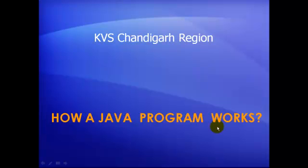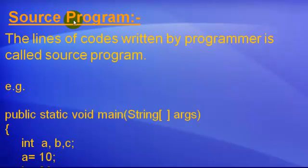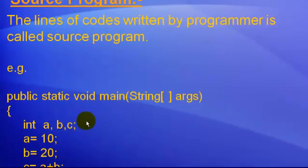In this presentation we shall learn how a Java program works and some basic concepts of object-oriented programming. Let us start with the source program. The lines of code written by a programmer by following the syntax of a particular programming language is known as a source program. For example, we have written a program here by following the syntax of Java programming language — we say that it is a source program or source code.